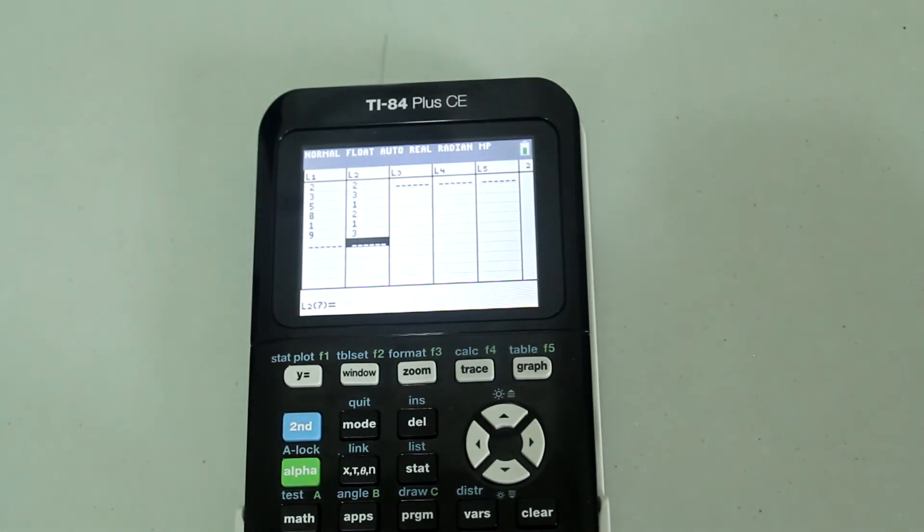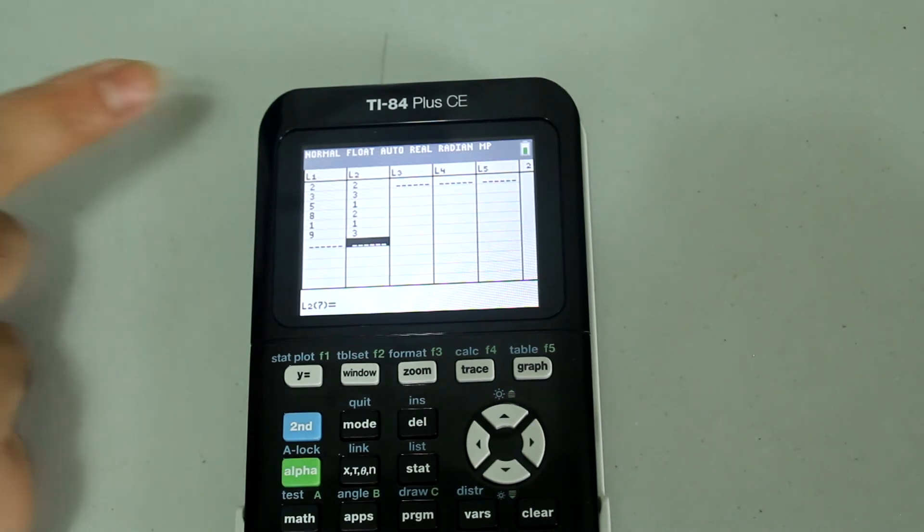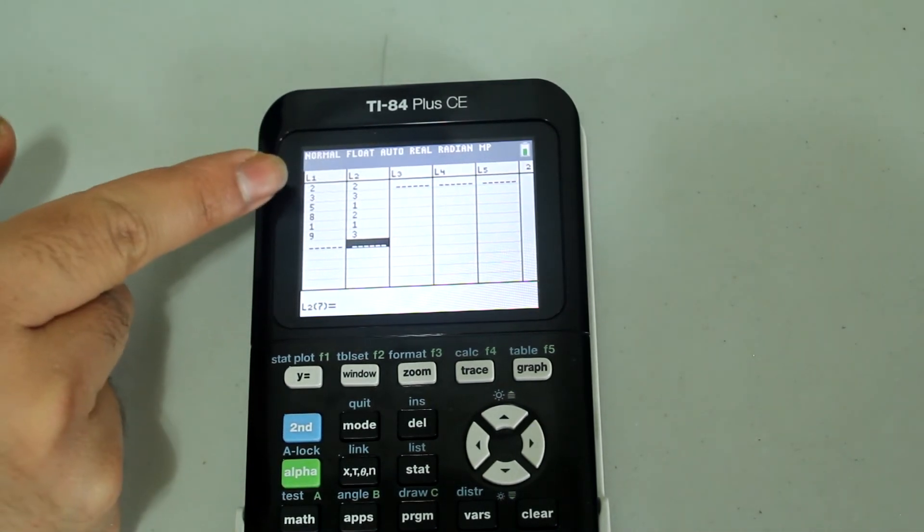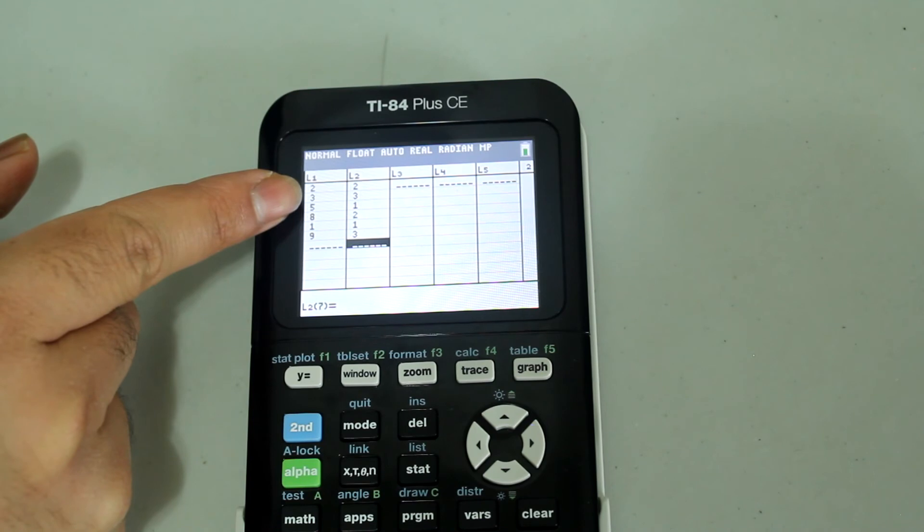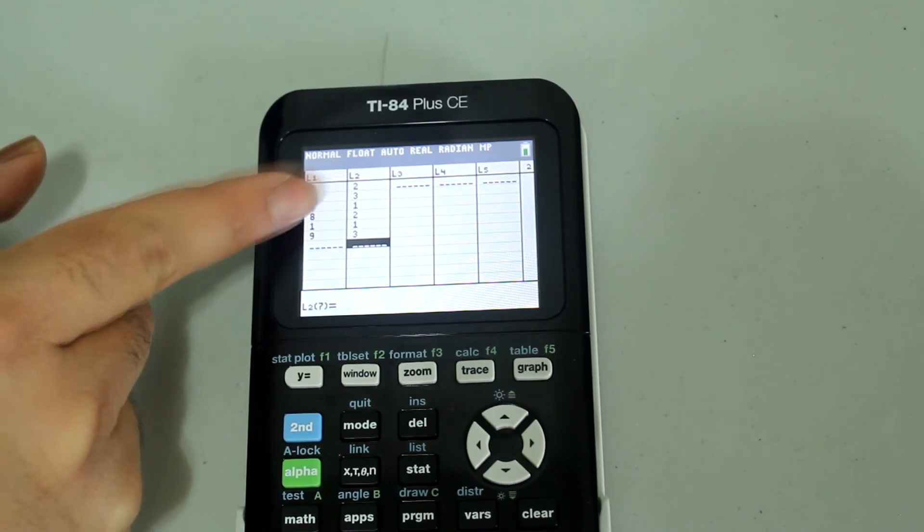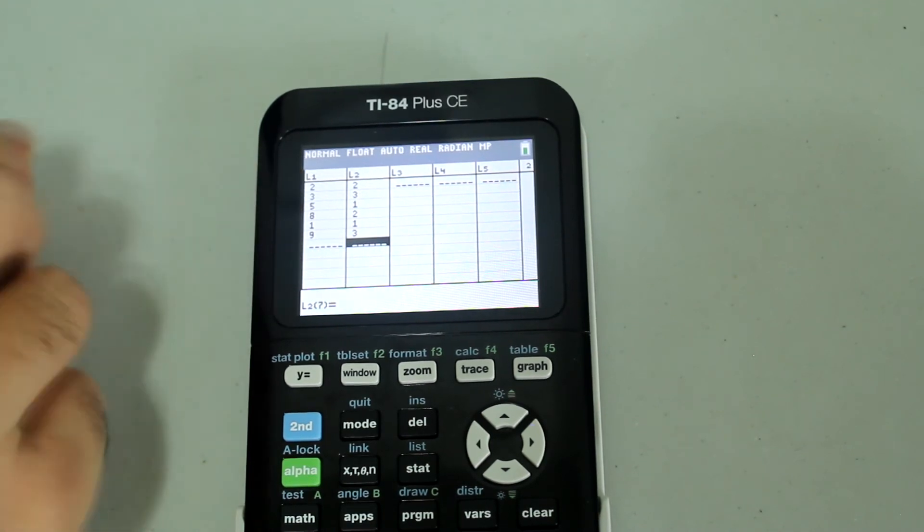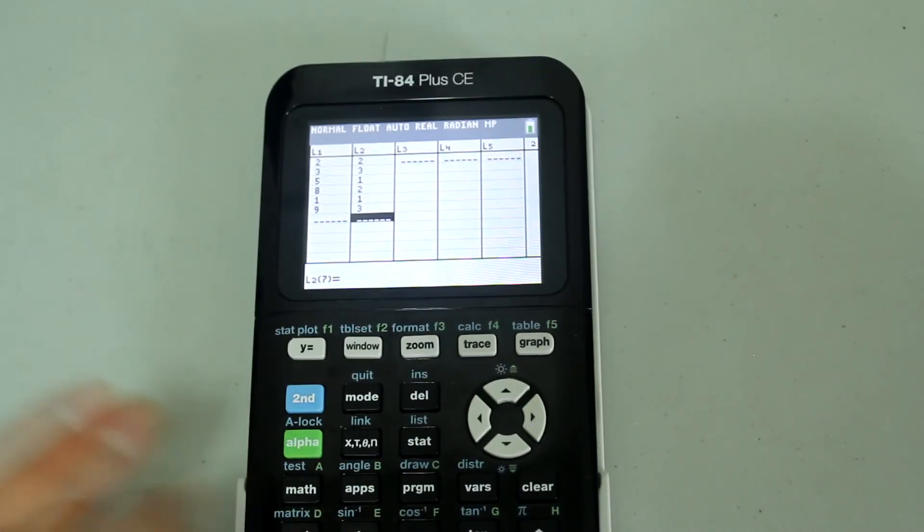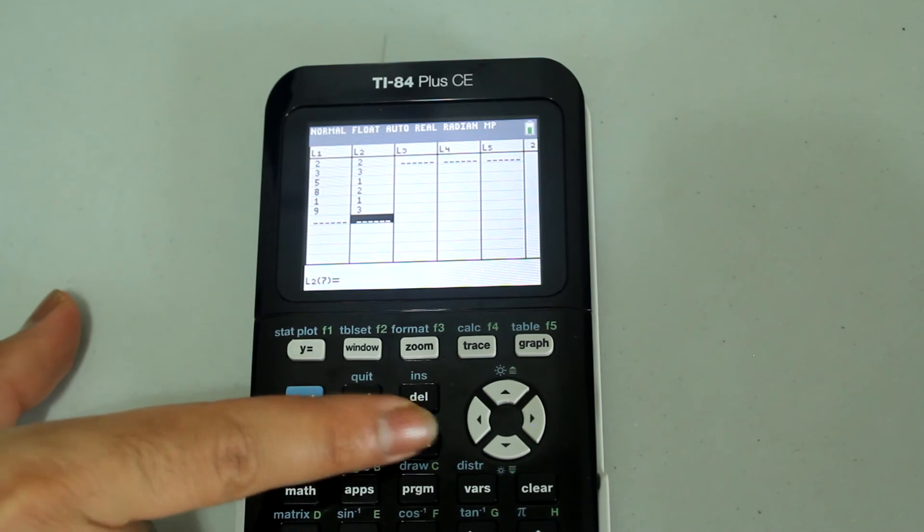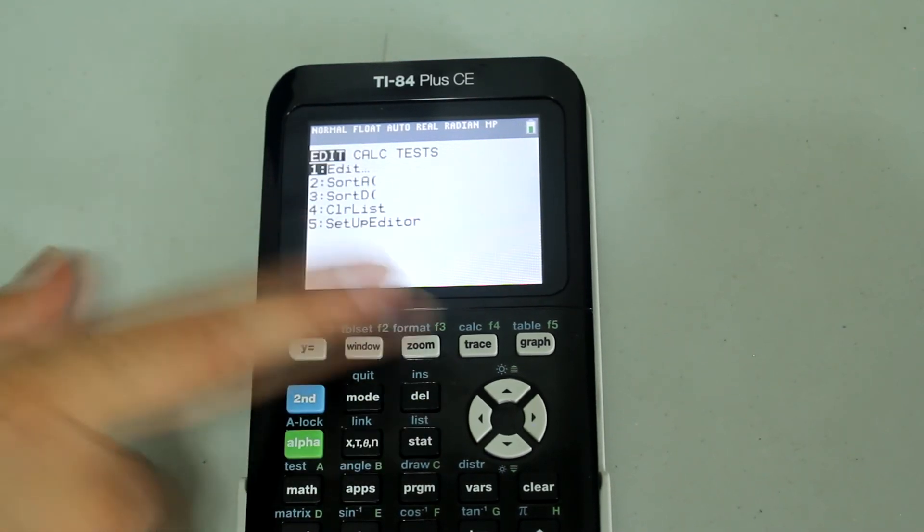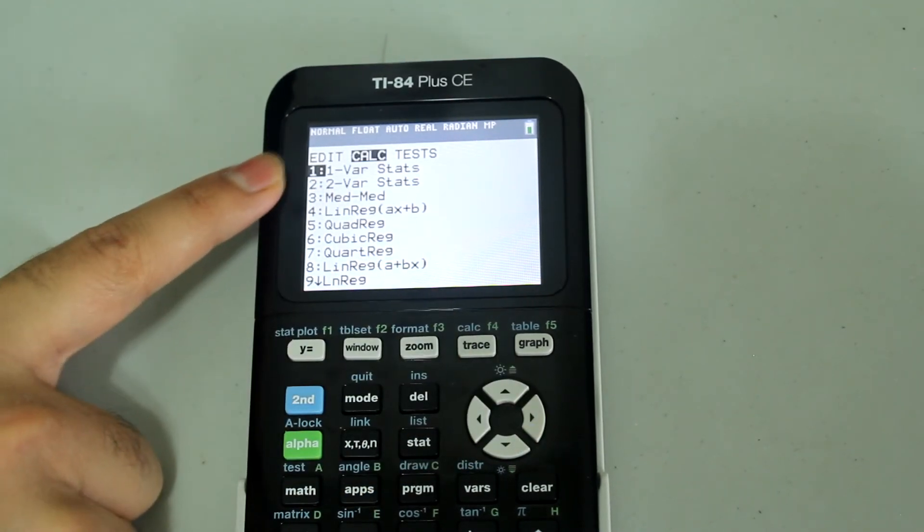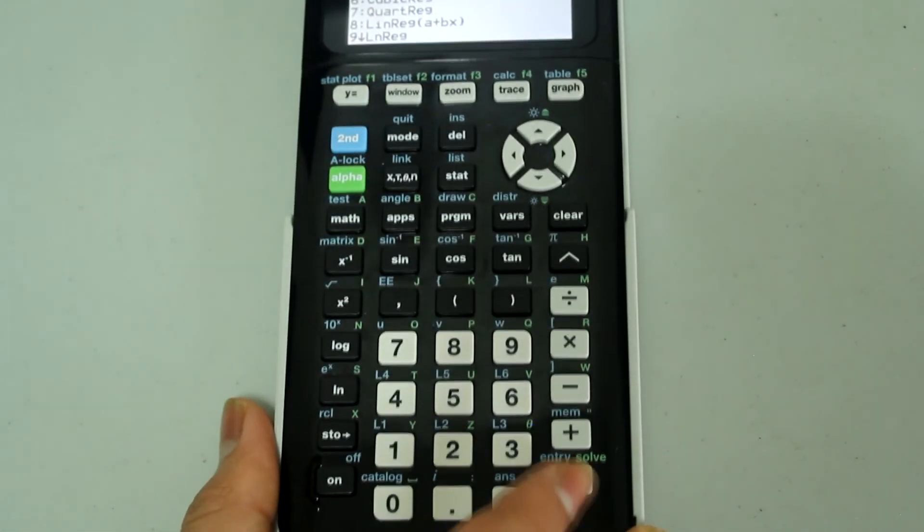Just to take a look at what's on the screen, we have 2 appearing twice, 3 appearing 3 times, 5 appearing once, 8 appearing twice, 1 appearing once, and 9 appearing 3 times. This time what we're going to do is go back to stats again, go over to calculate once again, select the one variable statistics, so just press enter.